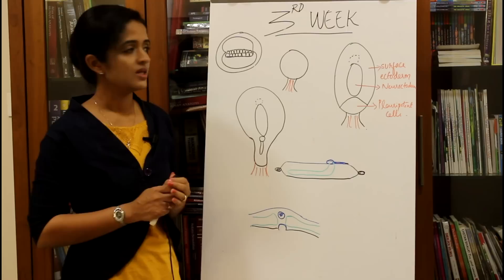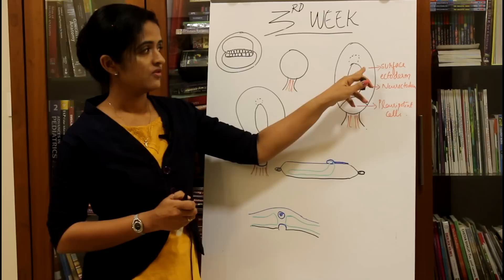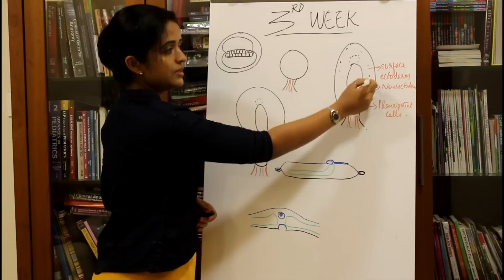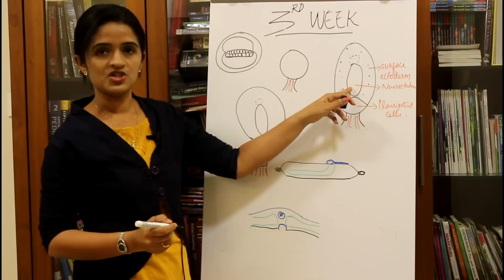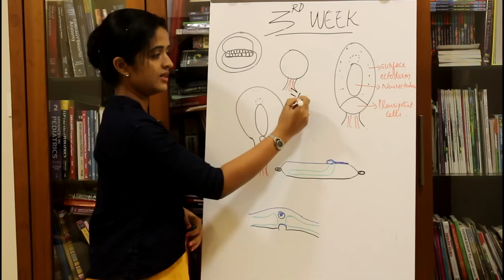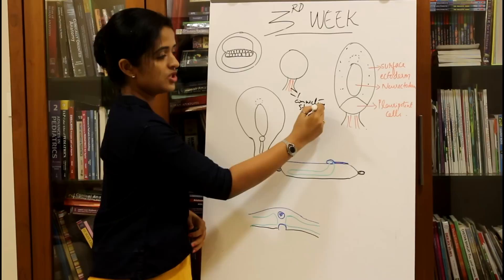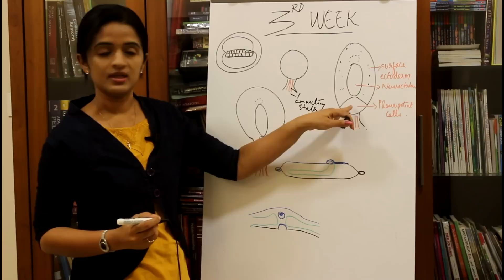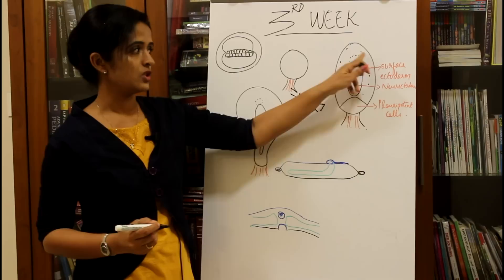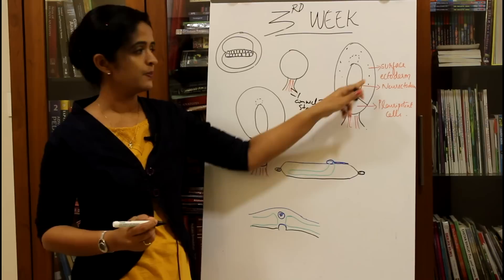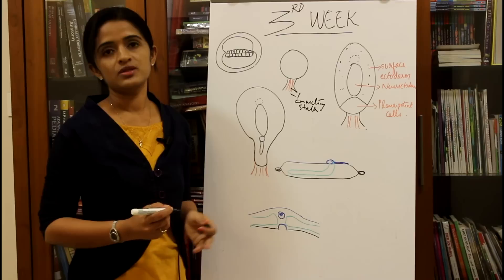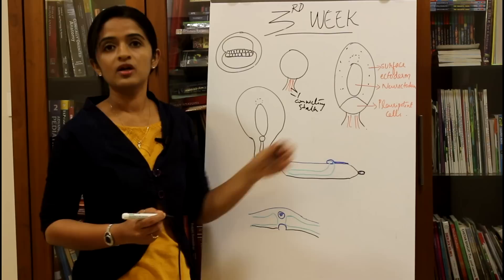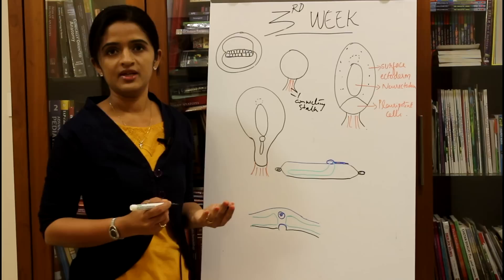The epiblast is getting differentiated into three types. The first is surface ectoderm. In the midline there is a specialized region known as neurectoderm, and towards the tail end there are pluripotent cells. The surface ectoderm forms the epidermis of skin. The neurectoderm gives rise to the central nervous system. The pluripotent cells towards the caudal end can give rise to all three germ layers.